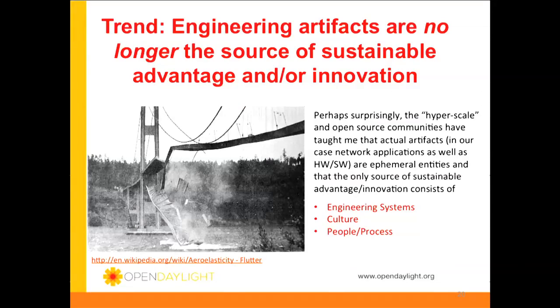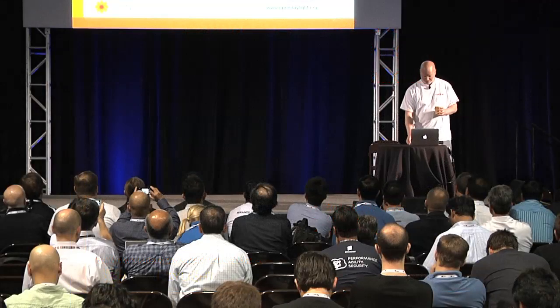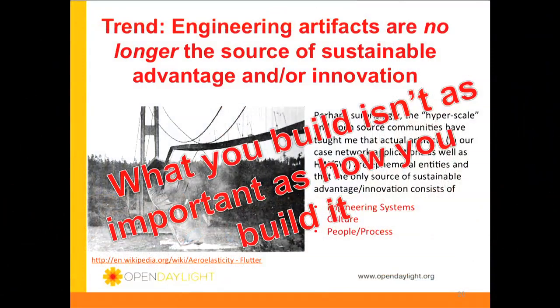Engineering artifacts aren't the source of sustainable advantage or innovation anymore. Working at a vendor that makes things, that's not a popular statement. But what is important is the engineering systems, the culture, and the people and processes — and the open-source thing really embodies this. If you compile this down one more time, you get this: what you build is not really as important as how you build it. I heard this in a different way in the keynote — the guy was talking about the good, cheap, and fast triangle, and what he said was that's morphed into fast, fast, and fast, because you can build good and cheap out of fast. That's the same thing — a corollary of this.